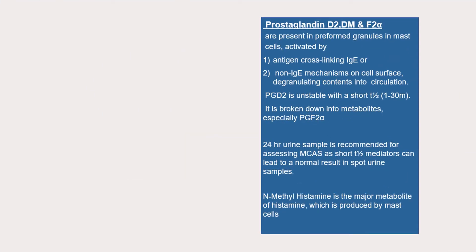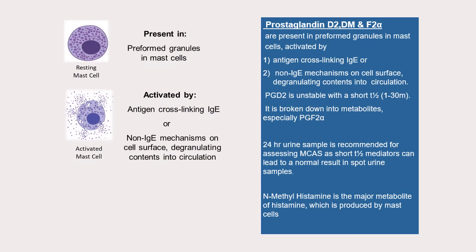Prostaglandins are present in preformed granules in mast cells and may be activated either by IgE or non-IgE mechanisms. Prostaglandin D2 is unstable, has a very short half-life, and is broken down primarily to prostaglandin F2-alpha very quickly. The prostaglandins are also secreted intermittently over a 24-hour period, and therefore a 24-hour urine collection is the ideal collection, although if a patient is symptomatic a spot sample may be informative.